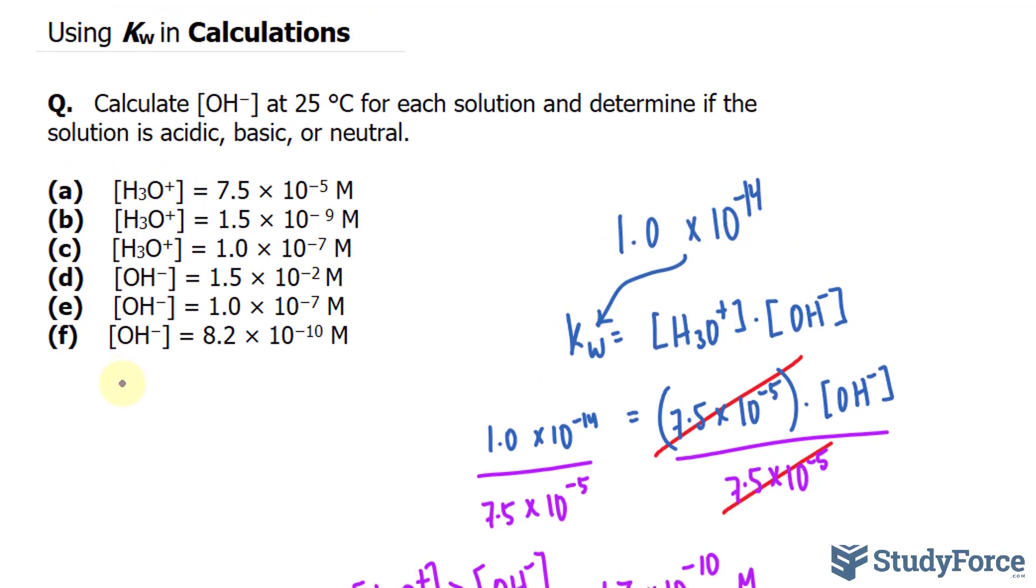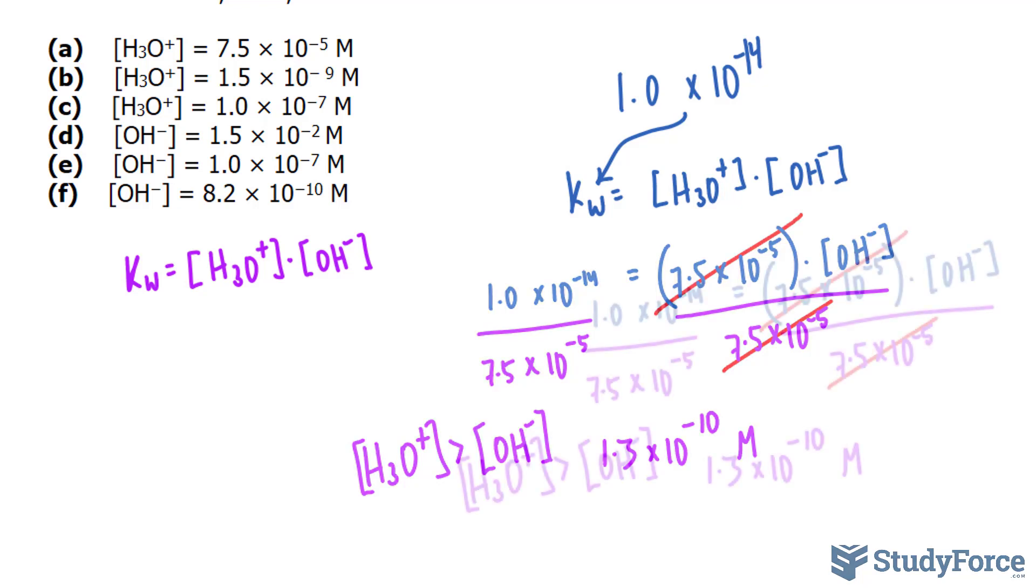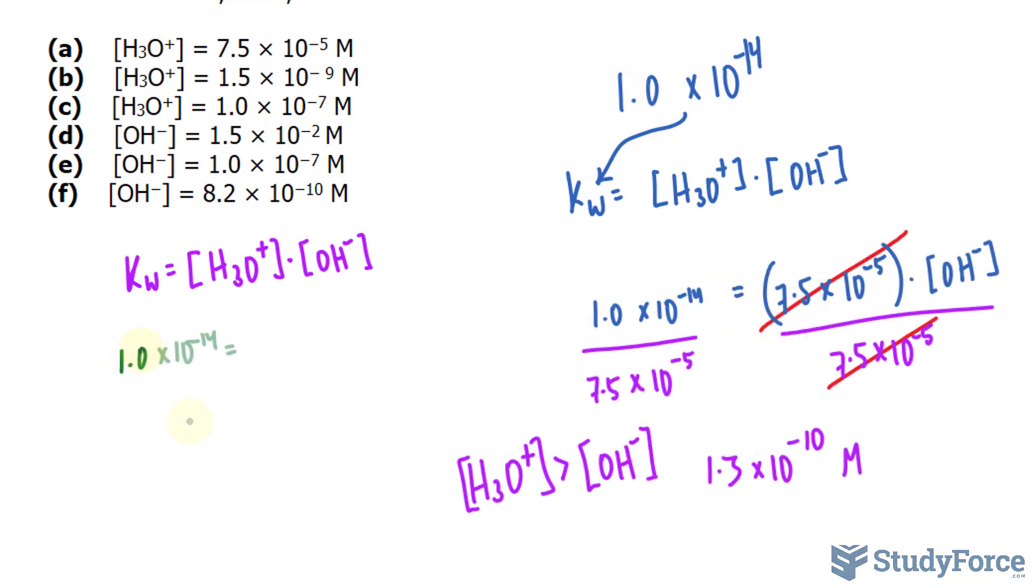So once again, we'll use the exact same formula: Kw is equal to H3O+ times OH-. And I won't show you all the steps this time. We'll fast forward as much as we can. We'll substitute the constant where it belongs, and hydronium is 1.5 times 10 to the power of negative 9.